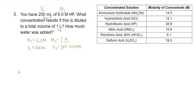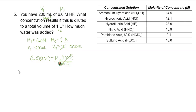Now let's solve for M2 by substituting into our dilution equation. M1 times V1 equals M2 times V2: 6.0 times 200 milliliters equals M2 times 1,000 milliliters. To solve for M2, we divide both sides by 1,000, leaving us with M2 equals 6 times 200 divided by 1,000.